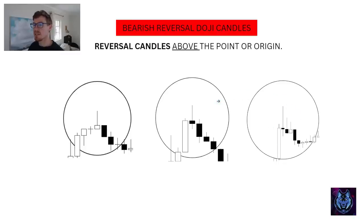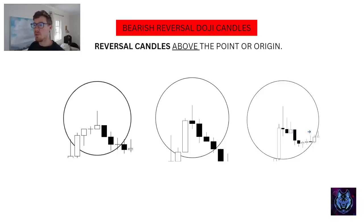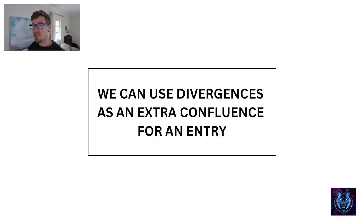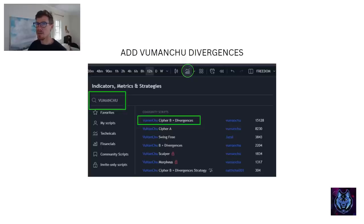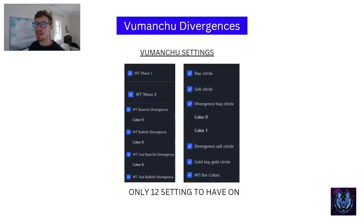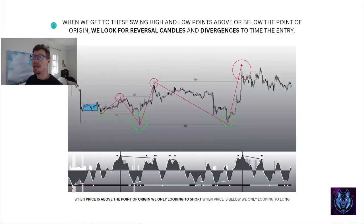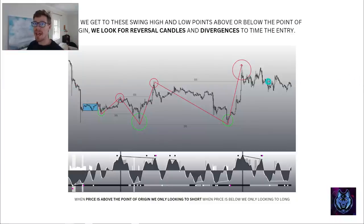Once you see these signals we can wait for the next candle — you can see it's an engulfing candle. We can also enter off the engulfing candle if you want extra confirmation. We use divergences on top of this as an extra confirmation for entry. I like to use Market Cipher — this is the free version Vumanchu, and this is how you can add it to your charts. These are the exact settings I'm using. When we get these swing highs and swing low points above or below the point of origin, we look for reversal candles and divergences to time the entry perfectly.